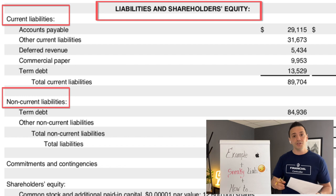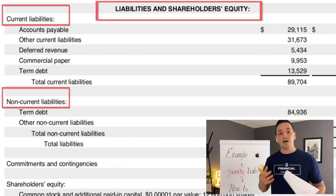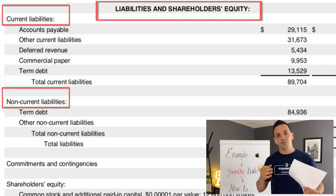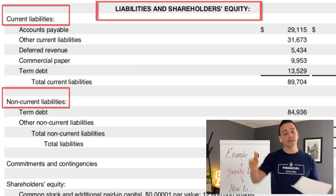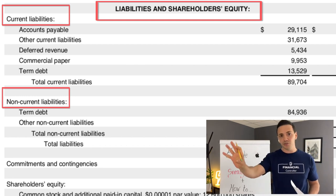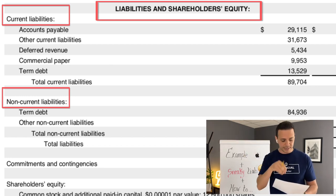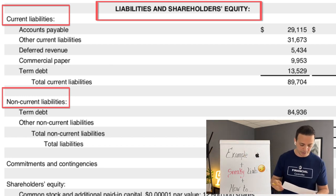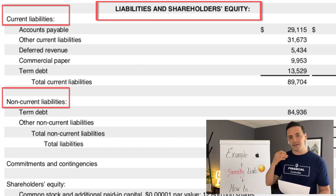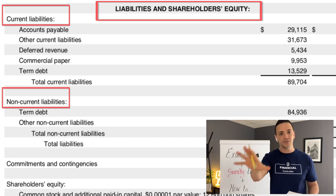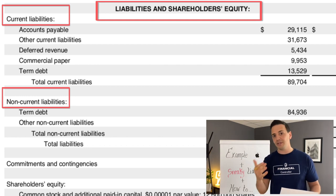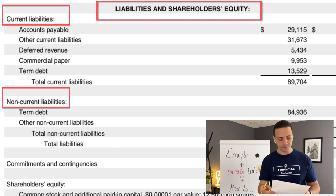Then we have deferred revenue, also referred to as unearned revenue. This is funds the company receives from customers for services and products that will be delivered in the future. It's a liability because you've received the cash but still have the obligation to deliver the goods or service later. Then you have commercial paper, which most likely means the company has issued commercial paper to investors and owes those funds in the future while paying some kind of interest expense.